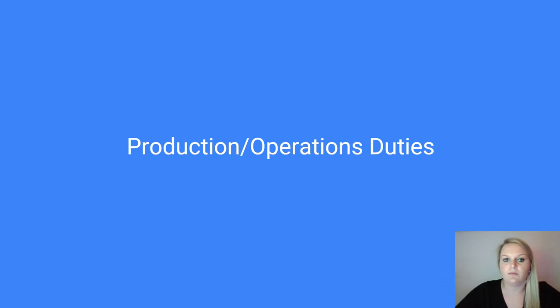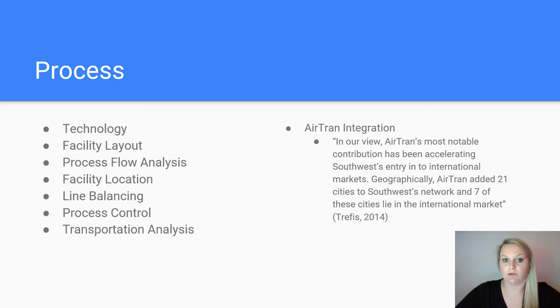The production and operations duties consist of the process, capacity, inventory, workforce, and quality of the company. Process decisions include technology, facility layout, process flow analysis, facility location, line balancing, process control, and transportation analysis.